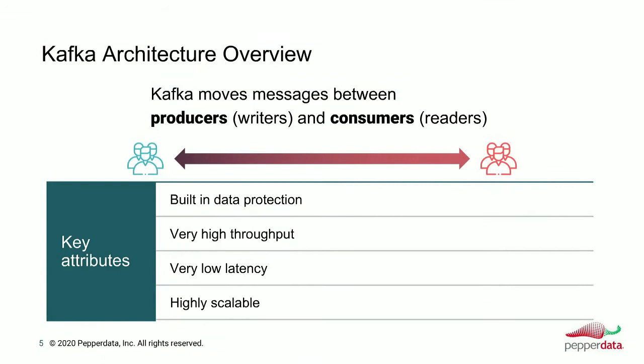For the architectural overview: Kafka is at its core a messaging system. Messages need to move from point A to point B. Along the way, they start with producers. Producers write a message, and that message goes to a Kafka broker to then be read by consumers. So you have writers and readers essentially on either end of this messaging system.